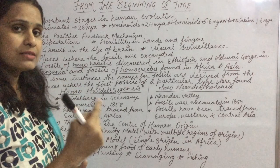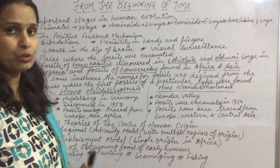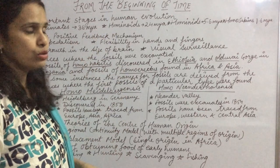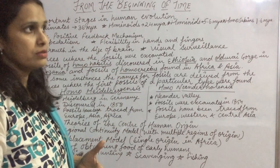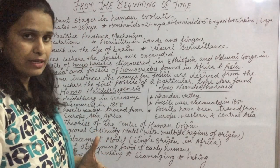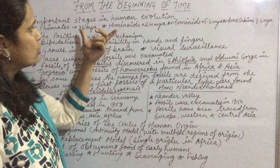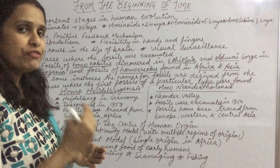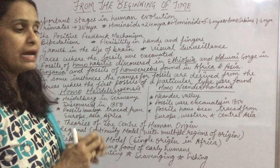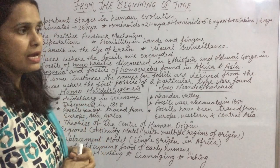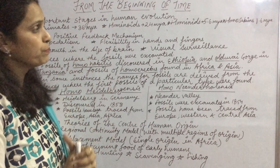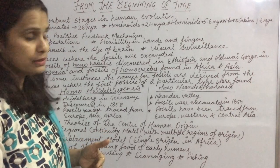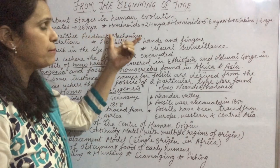Many species originated and went extinct during that long span of time. The various species were differentiated in terms of their skull size, teeth size, jaw size, and various other characteristics. These characteristics evolved because of the positive feedback mechanism.